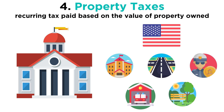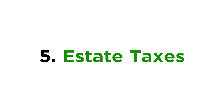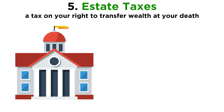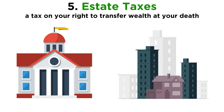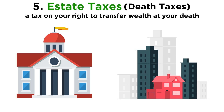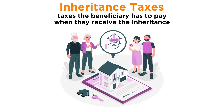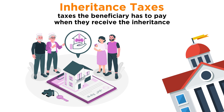Now the next few taxes are all taxes on assets. Number five: estate taxes. An estate tax is a tax on your right to transfer wealth at your death. It's automatically taken out of your estate, or all the stuff that you own at the time of your death. Typically, governments collect estate taxes on estates with assets worth at least tens of millions of dollars. Critics often nickname them death taxes. Related to estate taxes are inheritance taxes, which are taxes the beneficiary, or person inheriting the wealth, has to pay when they receive the inheritance — revolving around the idea that if you're getting free money from a dead relative, it's fine for the government to take some of it since you didn't earn that inheritance.